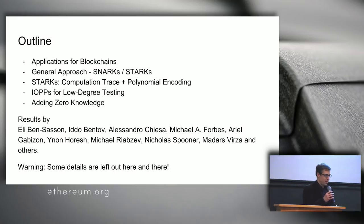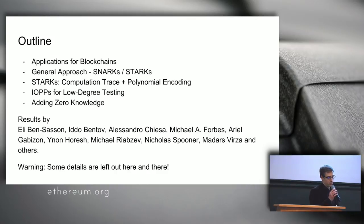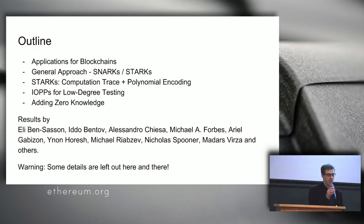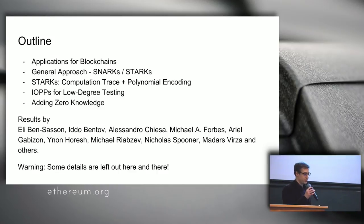As an outline of this talk, I will start with explaining why that might be useful for blockchains. There are basically two popular approaches to that problem: one is called SNARK and the other is called STARK. They share some properties and in some other regards they are fundamentally different. Since there were already talks about SNARKs, I will focus on STARKs for the rest of the talk and try to explain how they work.